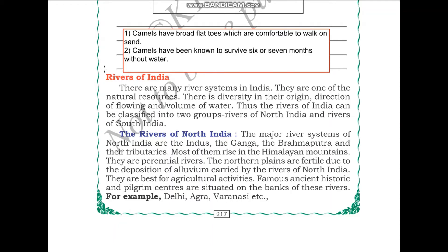Hello students, in this video we will be starting the rivers of India. There are many river systems in India and they are one of the natural resources. Natural resources means any naturally occurring substance that can be used for human gain. Examples are air, water, oil, coal, etc. Anything that is naturally occurring in nature that we can use for our benefits is called a natural resource, and rivers are one of them.